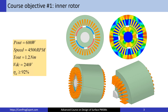The DC link voltage is 240 volts, and the desired efficiency should be greater than or equal to 92 percent. We will start by designing this motor.